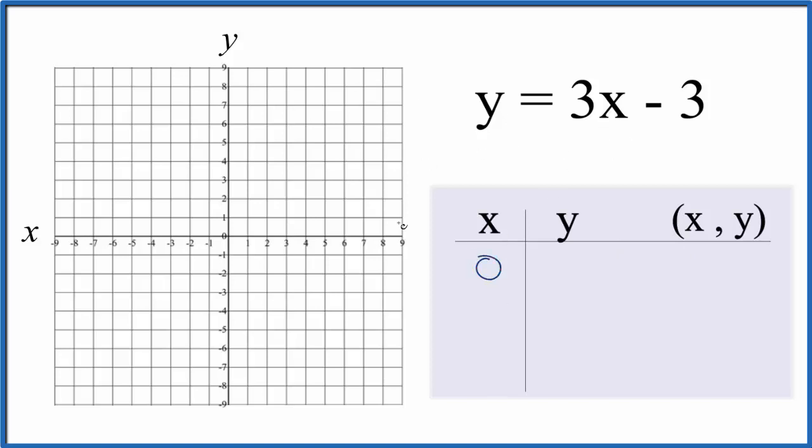Let's put 0 in because that's going to show up here on the graph. 3 times 0 is 0 minus 3, so y is -3. For 1, if we put 1 in, 3 times 1 is 3 minus 3, that's 0.